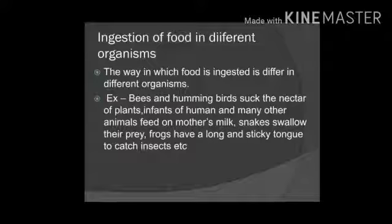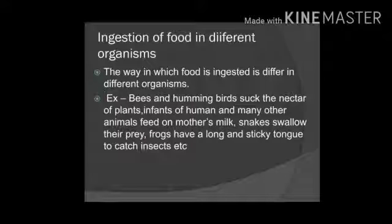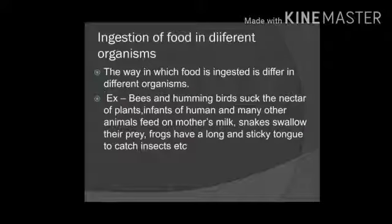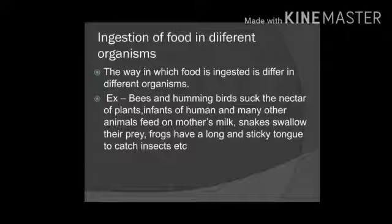Different organisms have different ways of ingesting food. Some organisms use outgrowths on their body, while some have special organs for ingesting food. For example, bees and hummingbirds suck the nectar of plants, infants feed on mother's milk, snakes swallow their prey whole, and frogs have a long sticky tongue to catch insects.